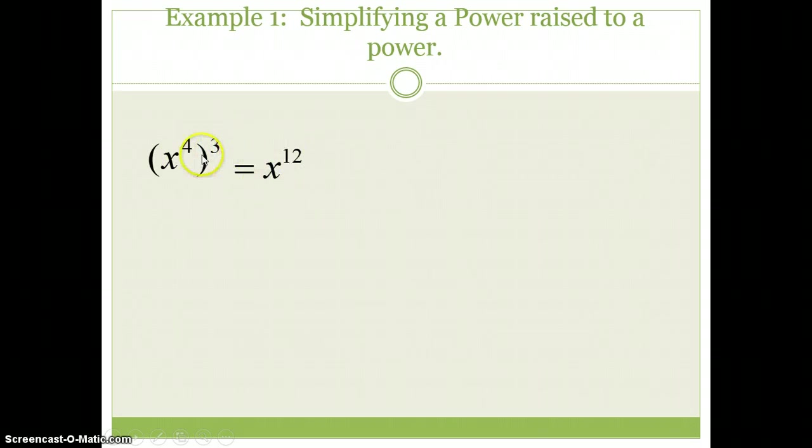Probably the biggest mistake would be to write this as 7, so adding, using the like bases add exponents. But again, there isn't a like base, there's only one base.